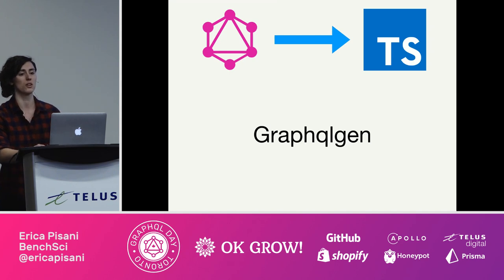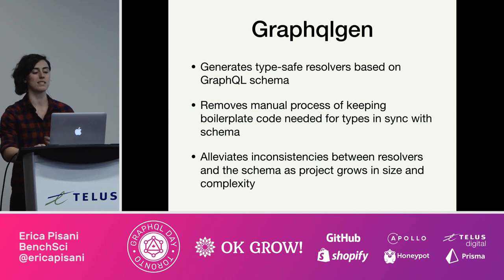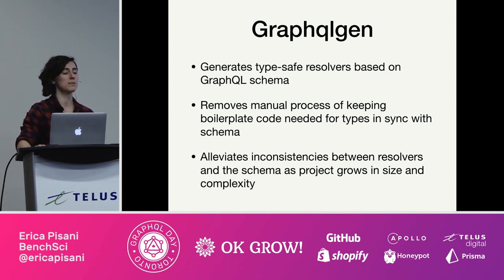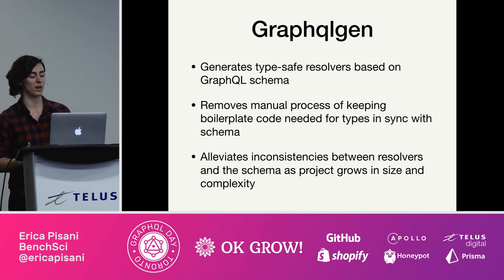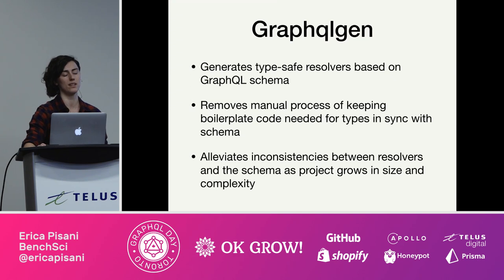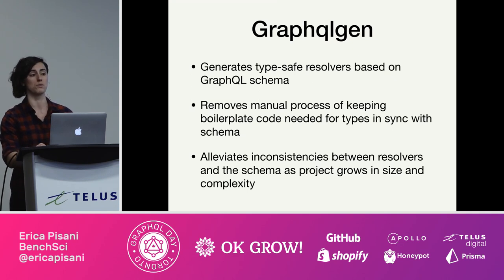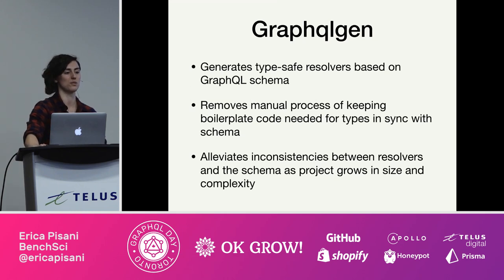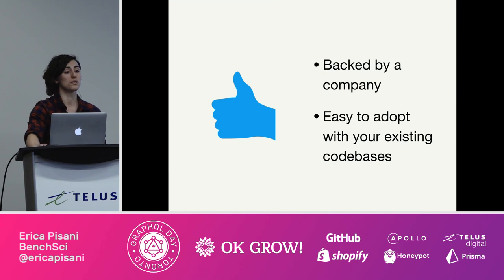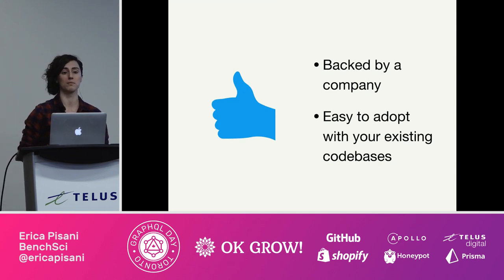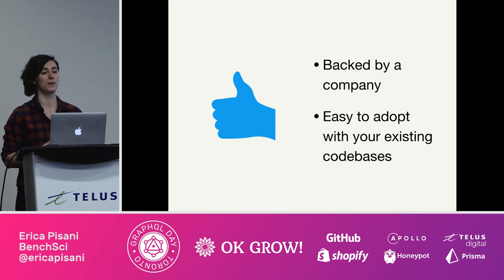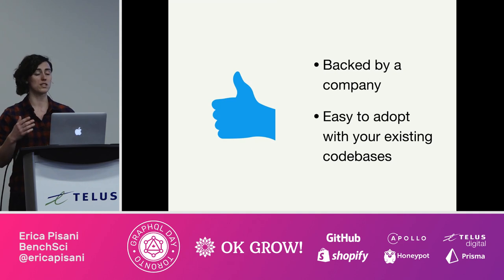For the first approach, we're going to look at a tool called GraphQL Gen built by the Prisma team. It generates type-safe resolvers based on your GraphQL schema automatically. The Prisma team wrote about their motivation in a blog post — they wanted to remove the manual process of keeping boilerplate code for type-safe resolvers in sync with the schema, and alleviate inconsistencies between resolvers and the schema as your project grows. What's great is it's backed by Prisma, so you can expect updates and improvements, and it's really easy to adopt with your existing code base.